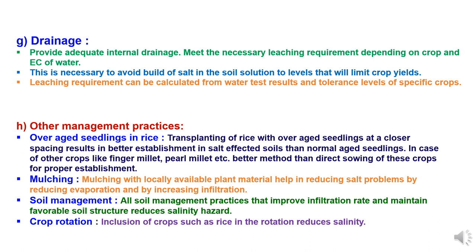Seventh method of using poor water is drainage. Adequate drainage method should be practiced when using poor irrigation water. It is necessary to avoid buildup of salt in the soil solution up to higher limits, so there should be frequent drainage practices.